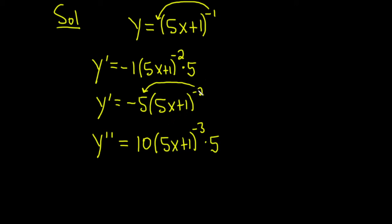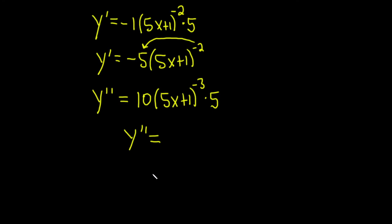Again, let's check that. Negative 2 times negative 5 is positive 10. We subtract 1, and then multiply by the derivative of the inside. Finally, we have 5 times 10, which is 50. And then parentheses (5x+1) to the negative 3.